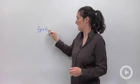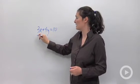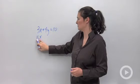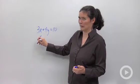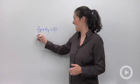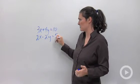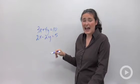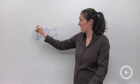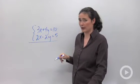3x plus 4y equals 10. Let's say I had 2x minus 2y equals 5 or something. I don't have any additive inverses. Nothing that I can add together to make a variable cancel out.